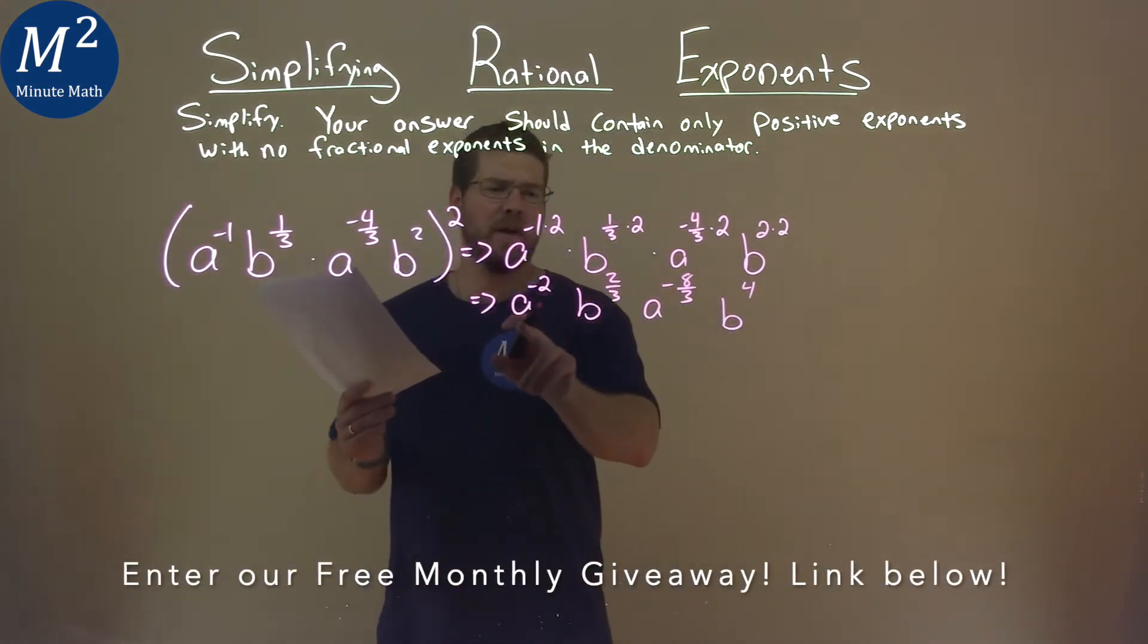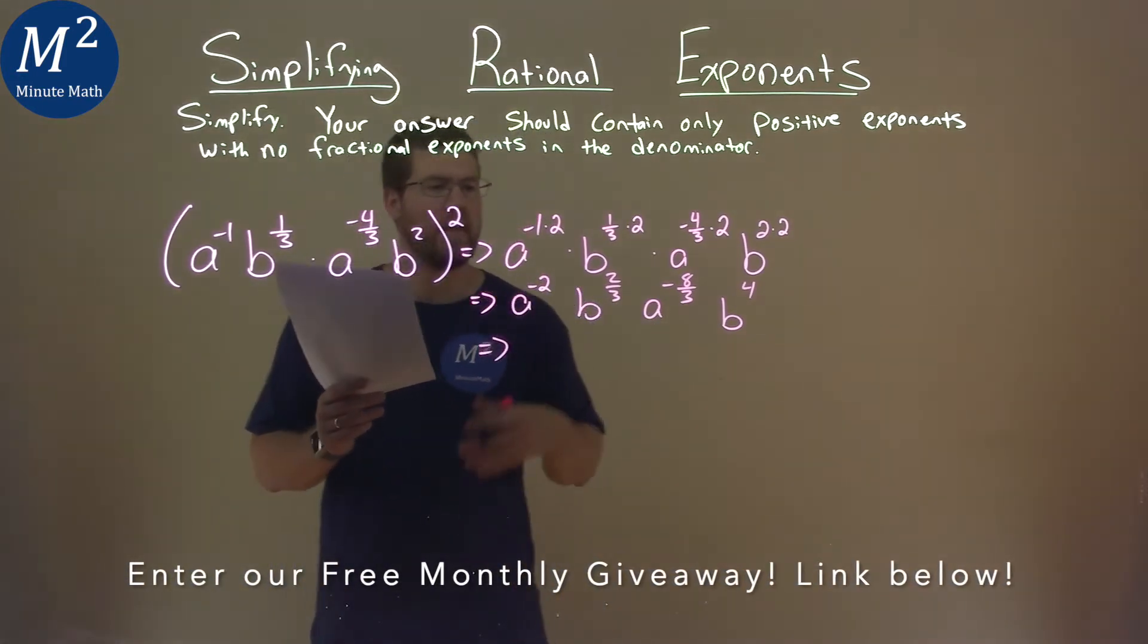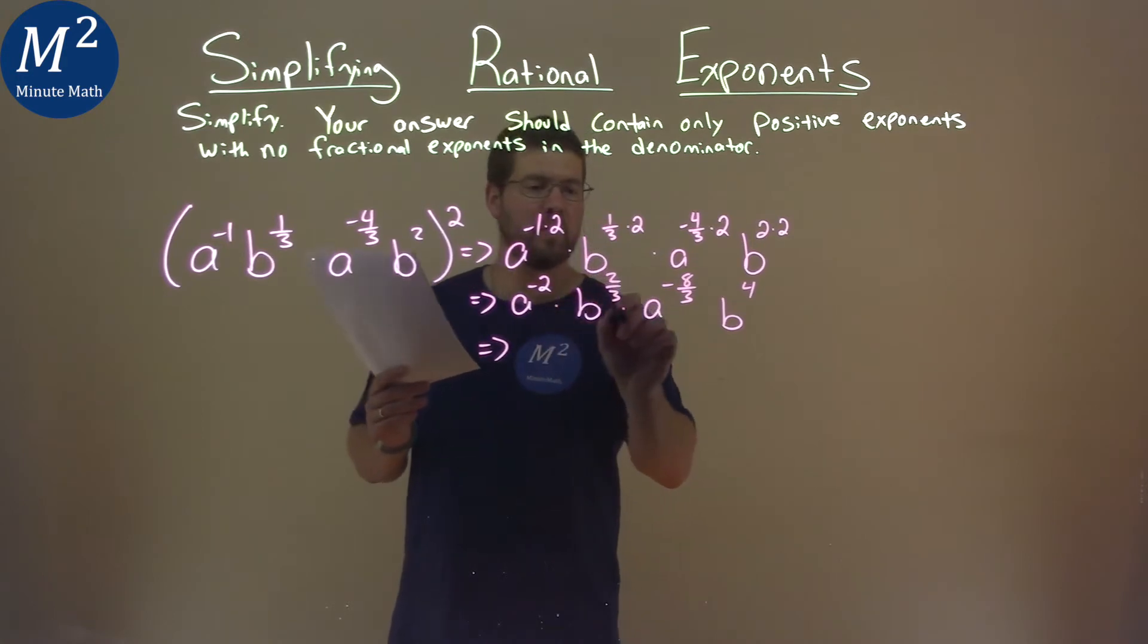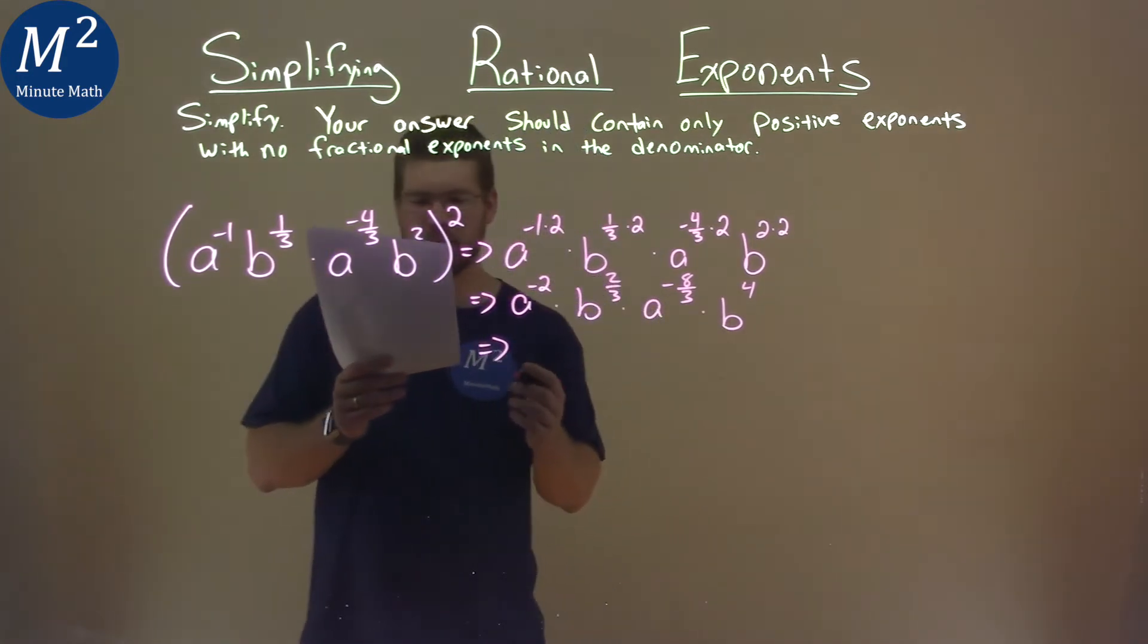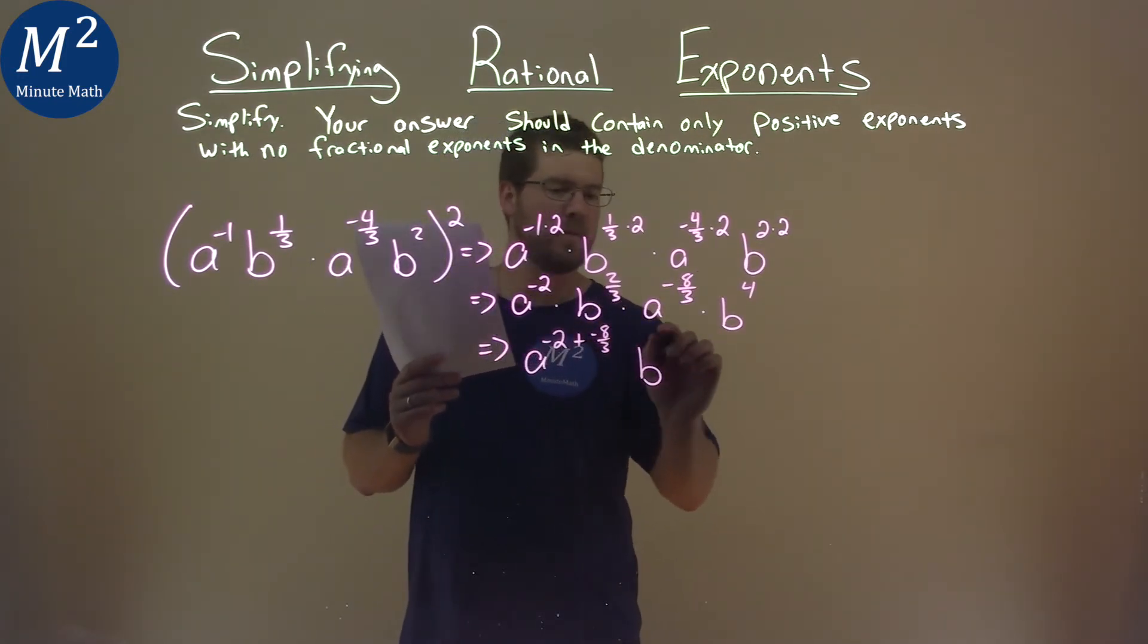Well, we have the same bases of a and some b's, so we're going to combine them together. And we have the same base, and they're all being multiplied. Remember that we add the exponents. So we have a to the negative 2 plus the negative 8/3 here, and then we have b to the 2/3 power plus 4.